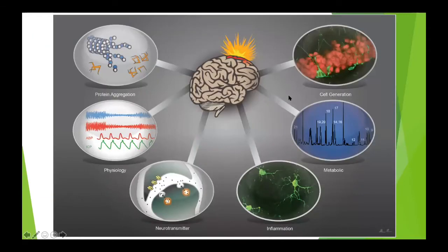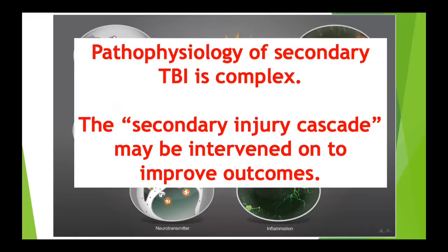Traumatic brain injury has a really complicated pathophysiological course and patients develop complications and cellular injury through various mechanisms. The most important thing about management is that we want to prevent the secondary hit and the secondary injury cascade. We really want to try to recognize these patients and get them treated adequately and in a timely fashion.